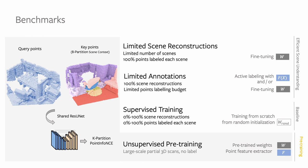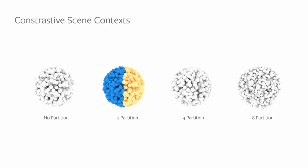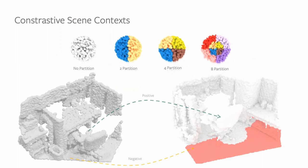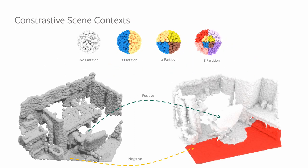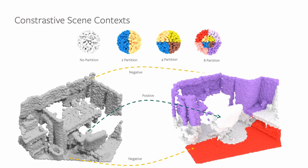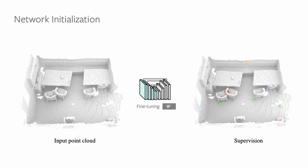We significantly improve upon point contrast by integrating scene contexts. Inspired by the classic shape-context descriptor, for each of the query points, we partition the space into multiple regions. Given two partial frames, the positive and negative pairs are then sampled and contrasted independently in each region so as to encode spatial contexts. Given a downstream task with limited labels, we can then fine-tune the network by using the pre-trained weights as initialization.